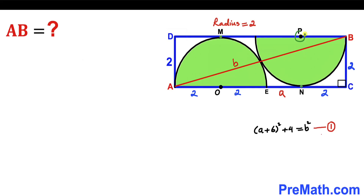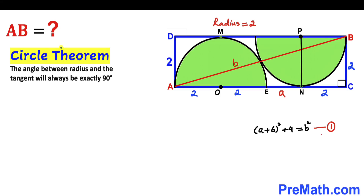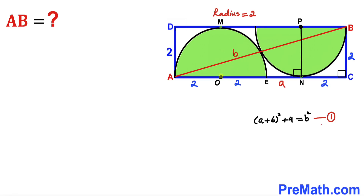In the next step, I connect center P with point N. Recalling the circle theorem, the angle between a radius and the tangent is always 90 degrees. So angle at N between PN and the tangent line is 90 degrees, since PN is the radius and the rectangle side is the tangent.